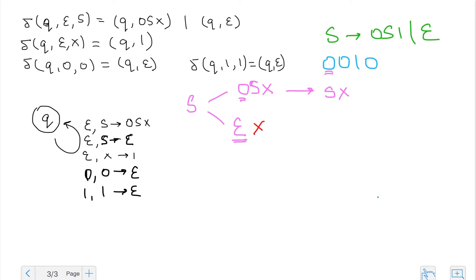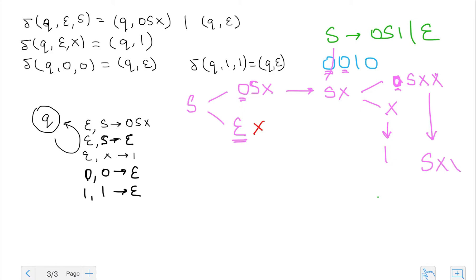The stack now changes to 's x', and I need to take both branches again. From here I'll either get 'zero s x x' or just 'x'. I've consumed this zero. From the 'x' branch, I can convert x to a one using rule three. In the other branch, I have a zero at the top of my stack and zero as my input symbol, so I convert to 's x x'.